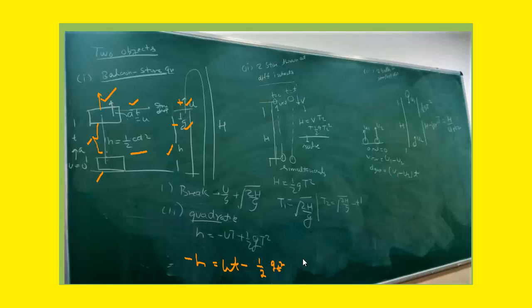So the balloon-stone question is now completely solved. I broke it into two parts: analyze the balloon's motion separately, and the stone's motion separately. Even if the stone is said to be 'dropped,' don't take its initial velocity as zero — take the velocity of the moving balloon at that moment as the stone's initial velocity. Subscribe to this channel for more such tips, and you will get updates automatically. Thank you.